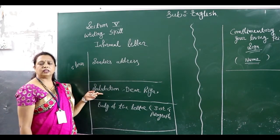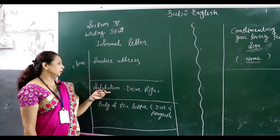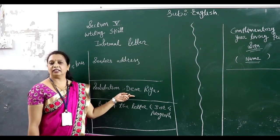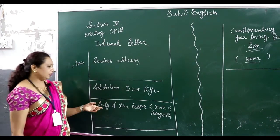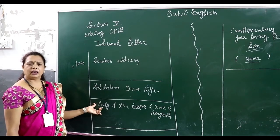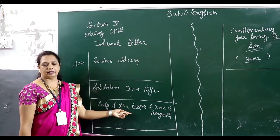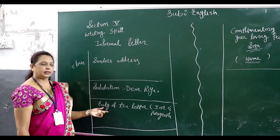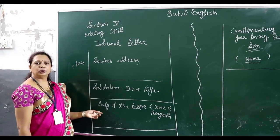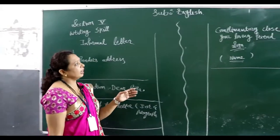After the address, leave one line, then write the salutation. The salutation means you mention the name of the person to whom you write the letter. Don't write 'My dear friend' — mention the actual name of your friend. After that, using three or four paragraphs or more, write the body of the letter, always using very casual and simple sentences.